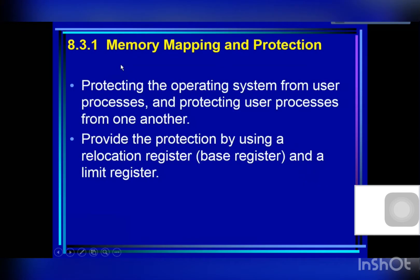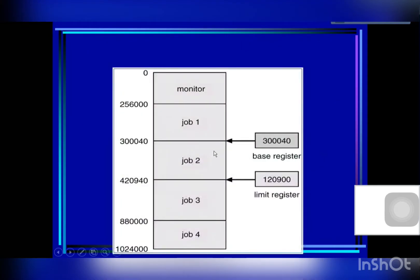Memory protection protects the operating system from user processes, and protects user processes from one another. For example, when Job 2 is executing on the CPU, the addresses it generates to access main memory cannot fall into the resident part of the operating system, nor into other processes — only within its own allocated region. Any address outside that region is invalid.